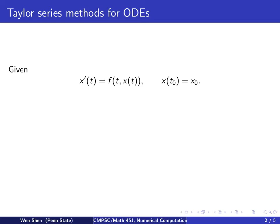Given our equation x prime equals f as a function of t and x, and we consider x as a function of t, and the initial data is given at t0, x equals x0.